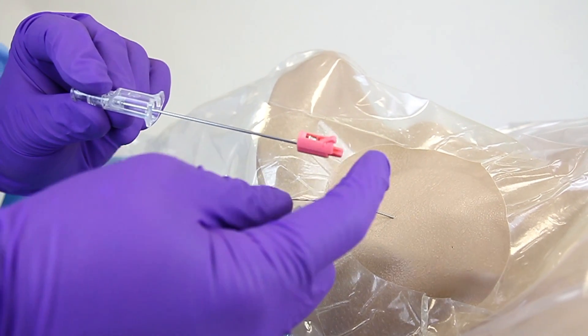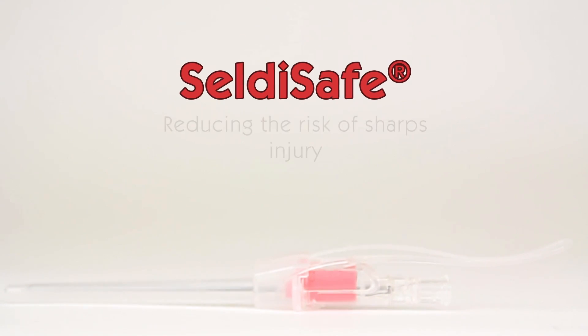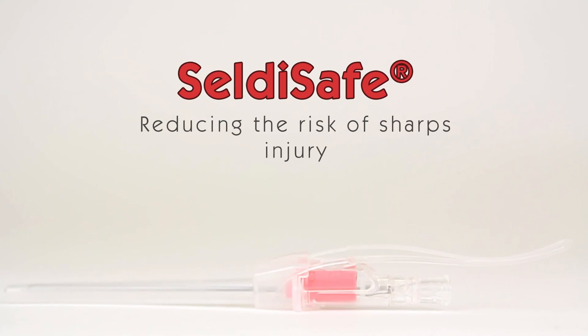Step 6. Discard the device in the Sharps Bin as per hospital procedure and continue catheter insertion procedure as usual.